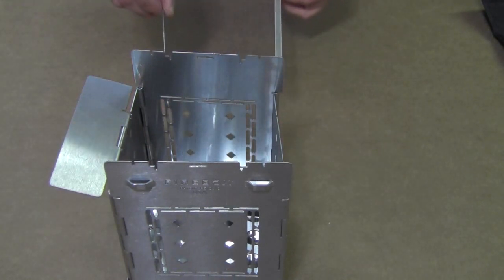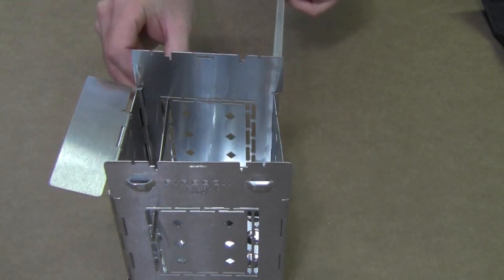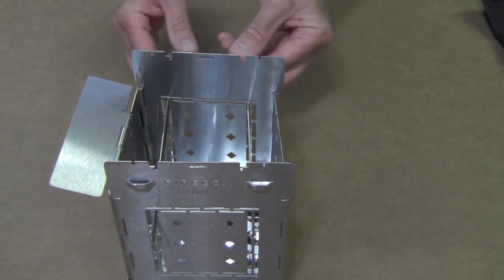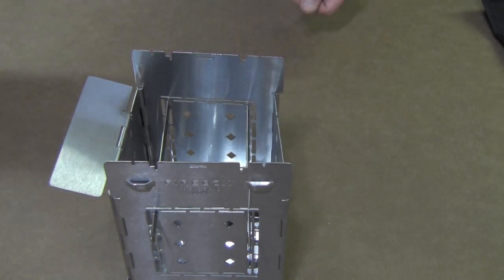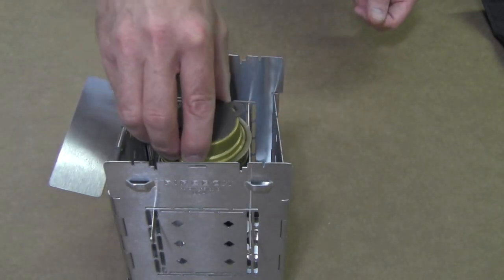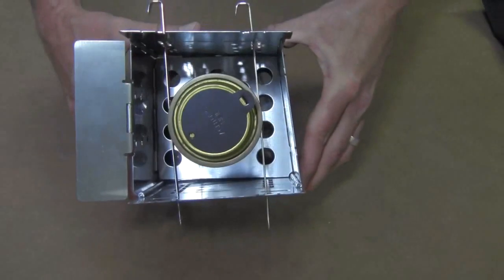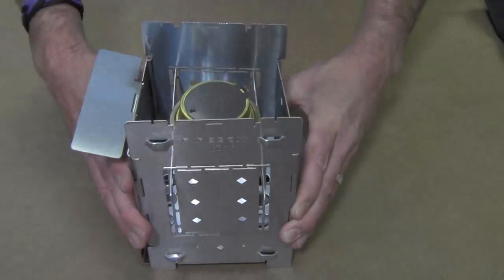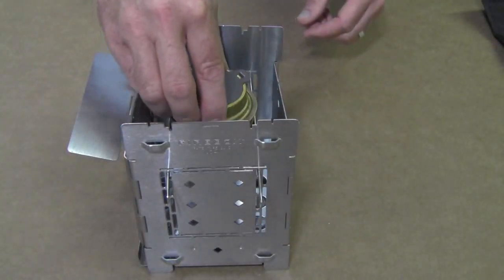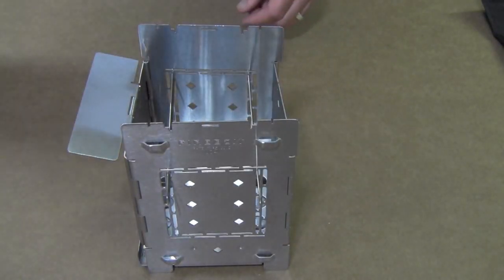We actually have a specialty position just for the Trangia alcohol stove. Slide those sticks through one of five heights to create a secure position for the Trangia alcohol stove. You can see that's really well held so you don't have to worry about spilling your alcohol out of your alcohol stove.